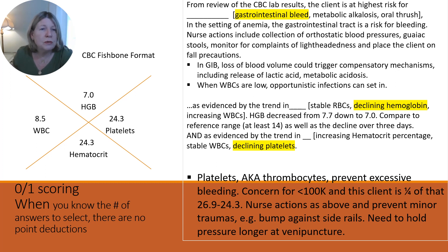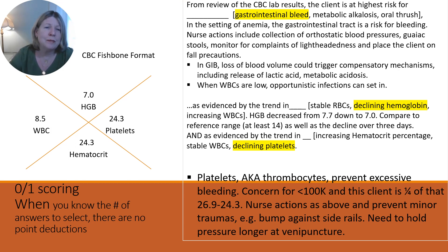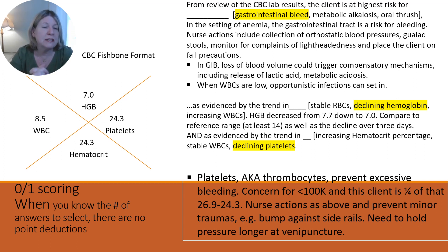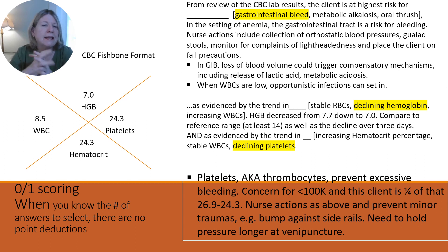Over to the left, we see a CBC fishbone format. As a general example, we have 8.5 as a white blood cell count, hemoglobin of 7.0, hematocrit taking that hemoglobin and multiplying by 3 as a general rule — it's not exact but brings you into that area. And then those platelets at 24.3. Is that a problem?